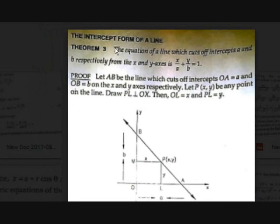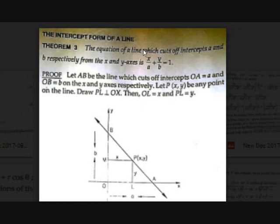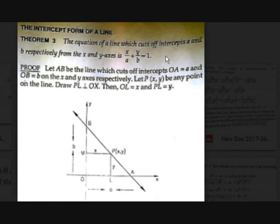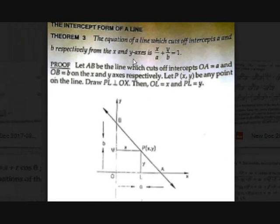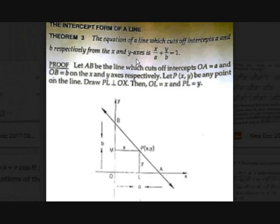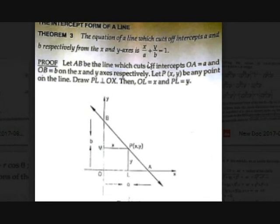The equation of a straight line which cuts off intercepts a and b respectively from the x and y-axis is x/a + y/b = 1. So if there are two intercepts, where a represents the x-intercept and b represents the y-intercept, then the equation is x/a + y/b = 1.